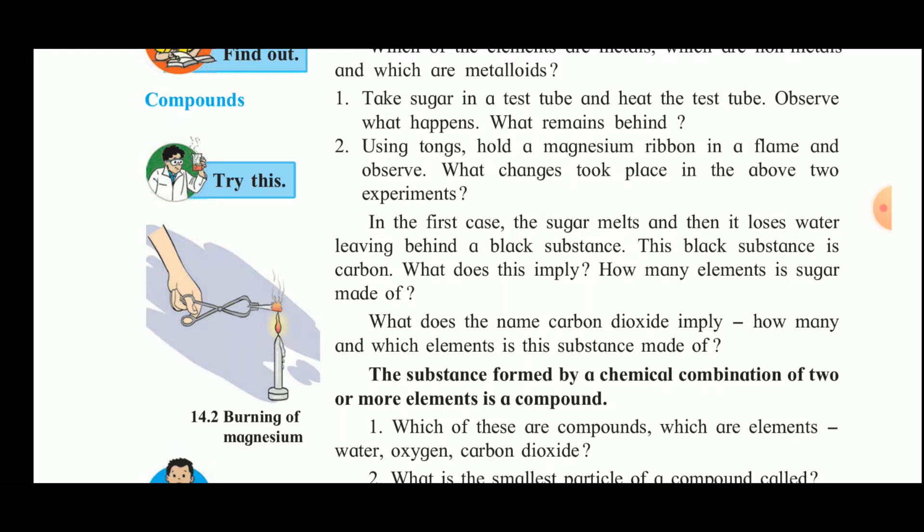Sugar is sucrose. The molecule of sugar is composed of 12 atoms of carbon, 12 atoms of hydrogen, and 11 atoms of oxygen. So sugar is a compound made from these three elements: carbon, hydrogen, and oxygen. It is a carbohydrate.